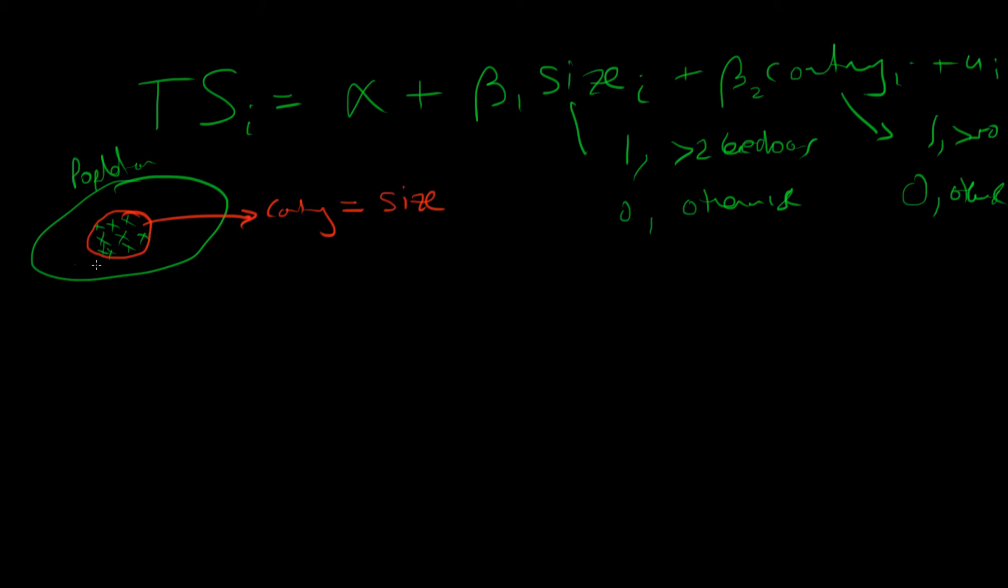Notice that because we've taken a poor sample here, our ability to identify beta 1 and beta 2 is going to be impossible.